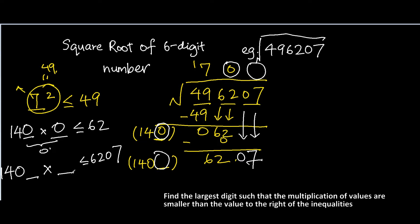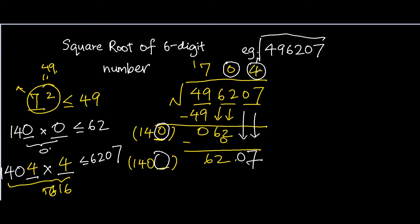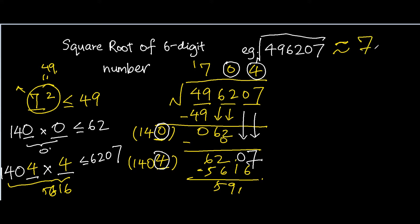The ideal digit here is 4. We get 1404 times 4, which gives you 5616, and that is smaller than or equal to 6207. So this digit is 4. Taking 6207 minus 5616 gives you 591. We won't go on to the decimal points. We know that this square root has a decimal point — it's not a perfect square. So we can approximate the square root of 496207, which is about 704.